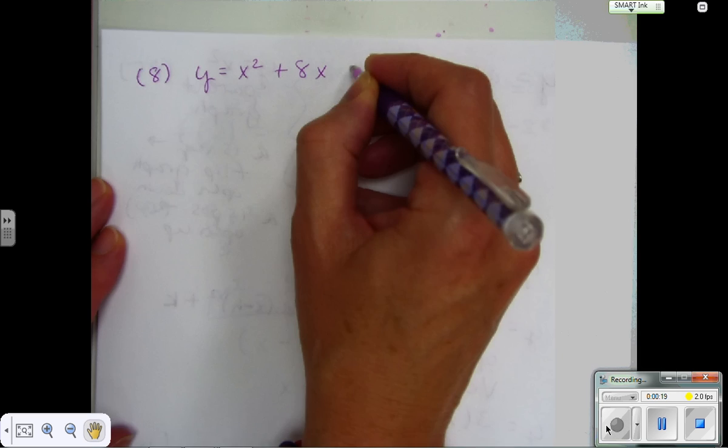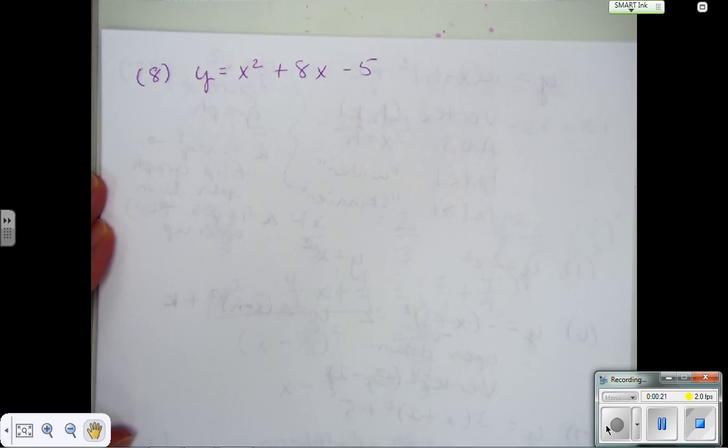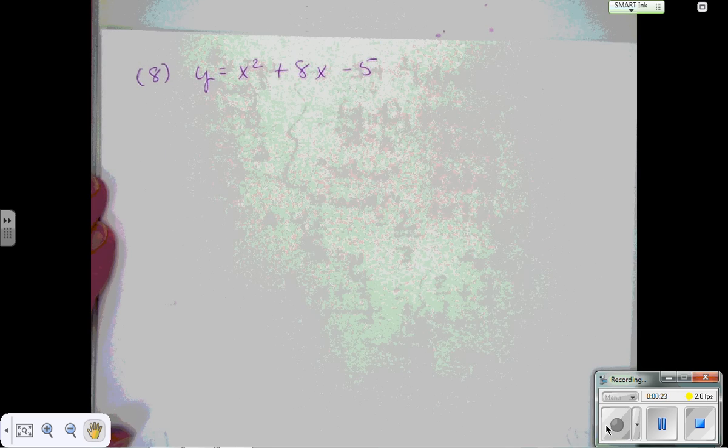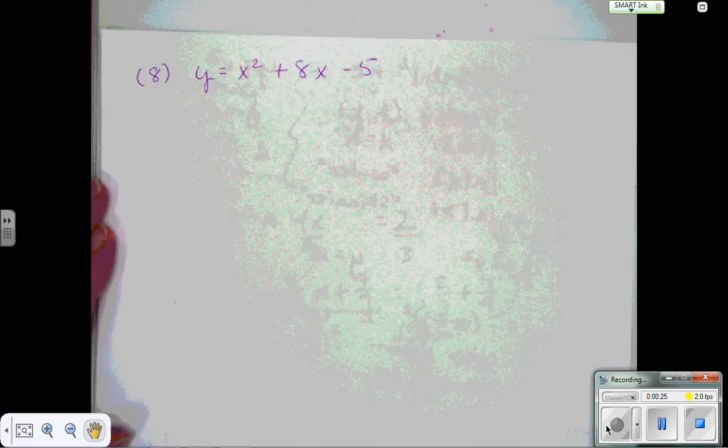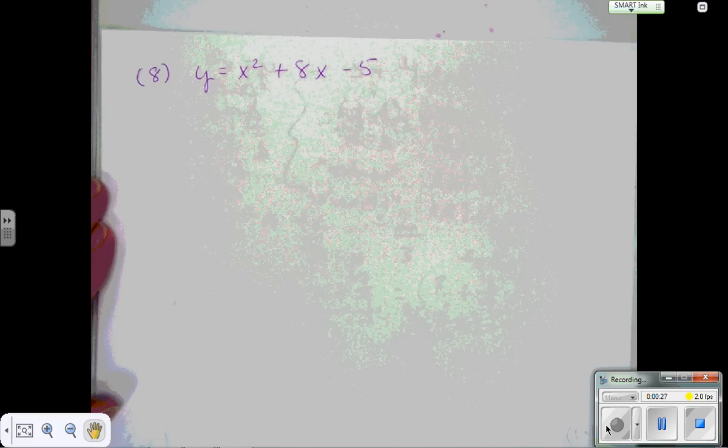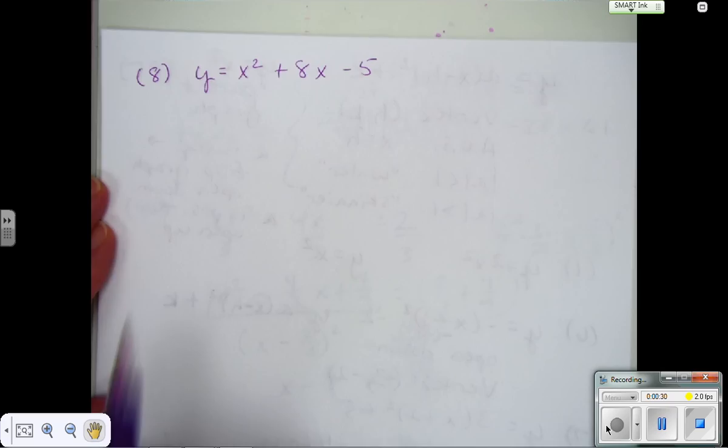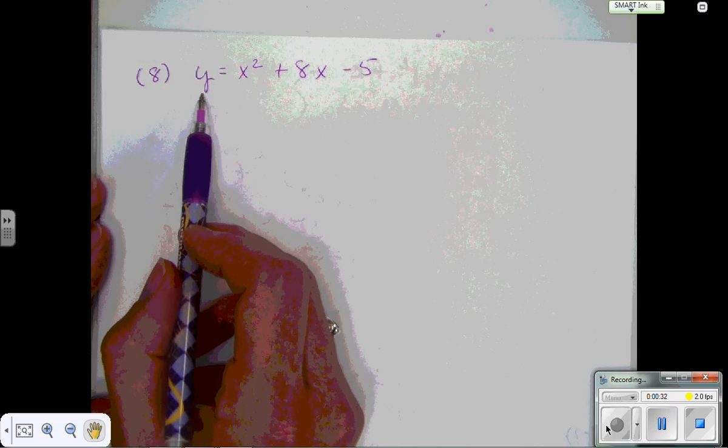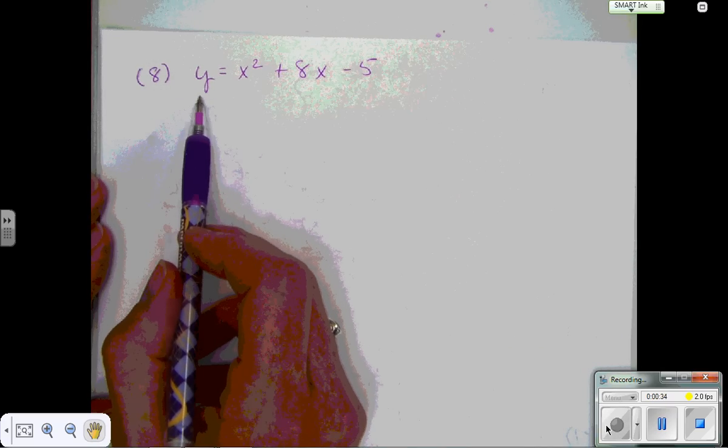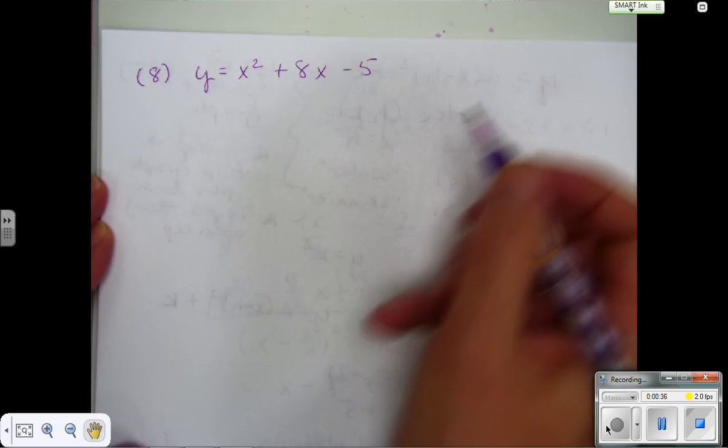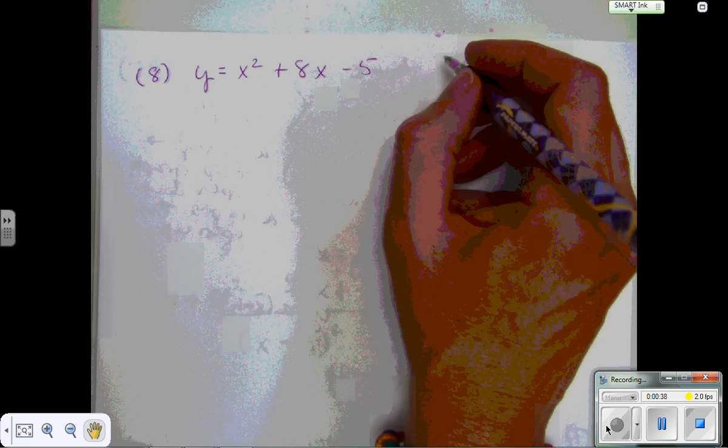Before, when we were completing the square, the y was actually equal to 0 because we were trying to solve for x. Now what's going to happen here is that we are going to just work on one side of the equal sign because the y is going to stay a y. We're not trying to solve for x. We're just trying to get this into vertex form.